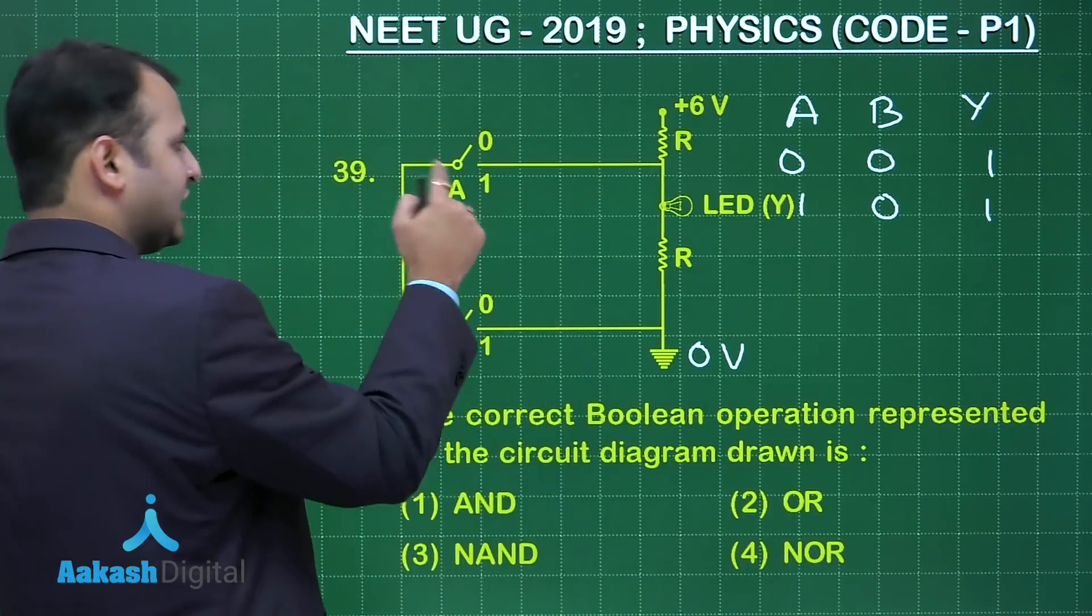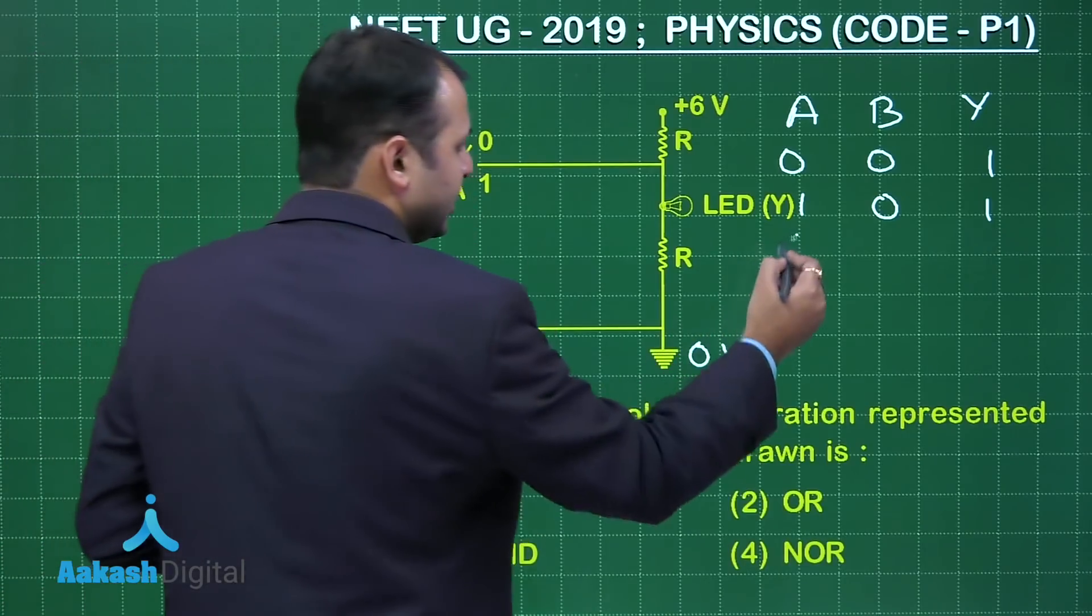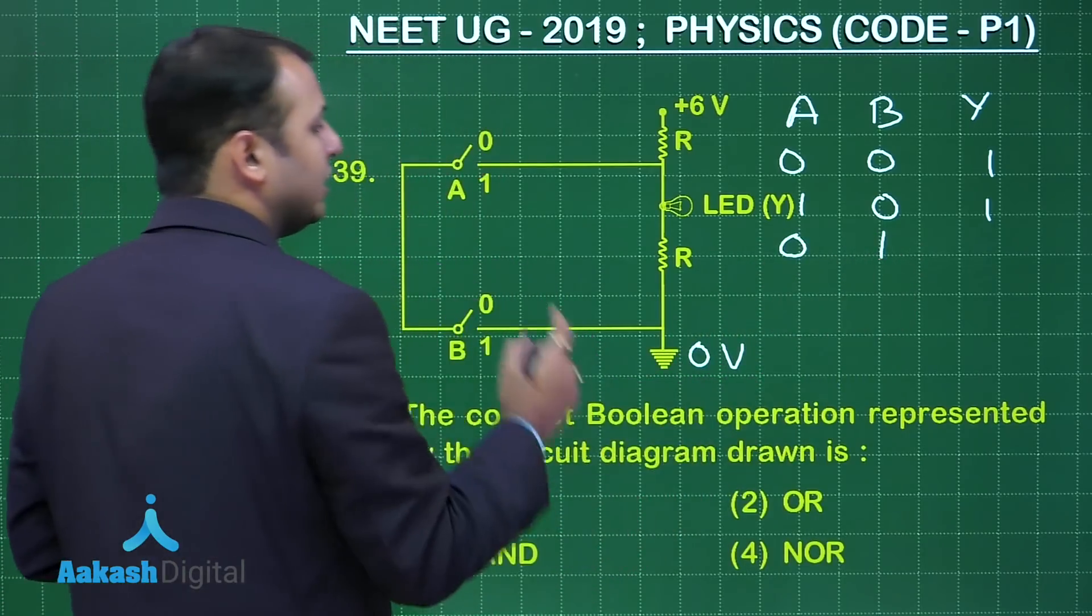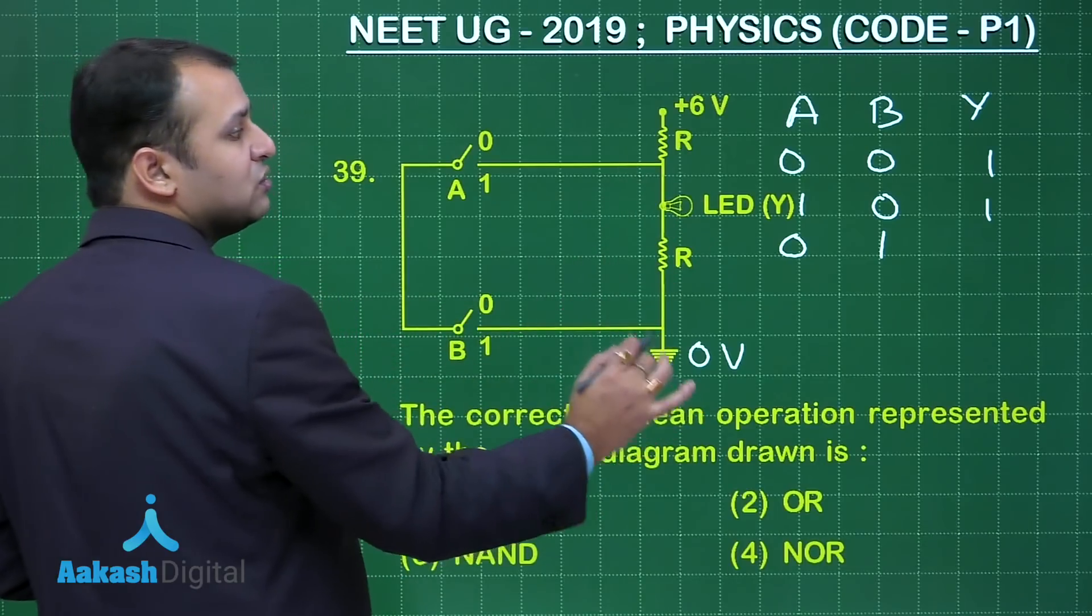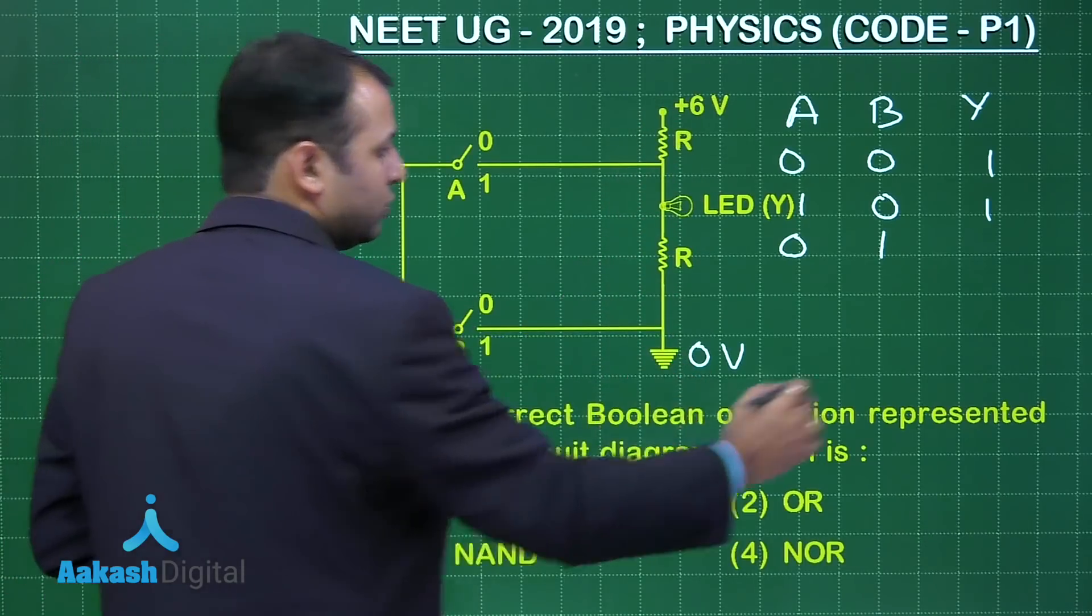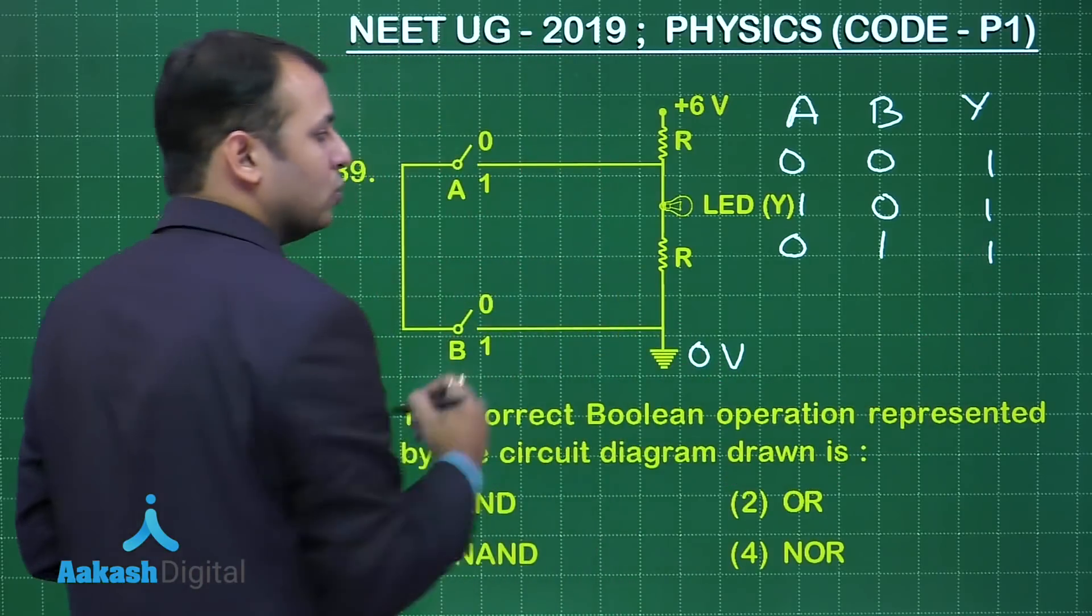Let's take the reverse. Let's keep this as open and this as closed. So let's take A as 0 and B as 1. Again in this case the potential difference will remain high because here is 6 volt, here is 0 volt. In that case also bulb will glow.